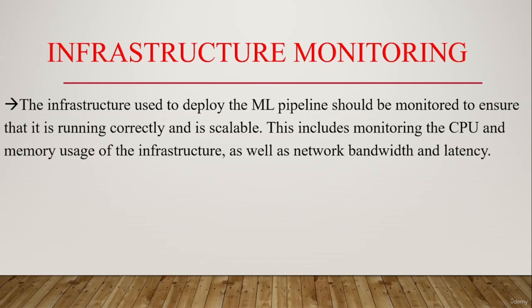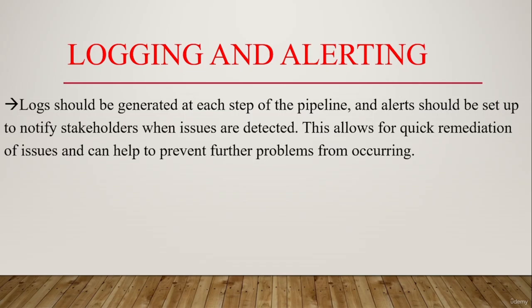Continuous monitoring and analysis of infrastructure data can provide insights into system usage and performance trends, which can be used to optimize the infrastructure and improve the efficiency of the machine learning pipeline. In summary, infrastructure monitoring ensures that the pipeline is correct and scalable. Logs should be generated at each step of the pipeline, and alerts should be set up to notify stakeholders when issues are detected, allowing for quick remediation and preventing further problems.